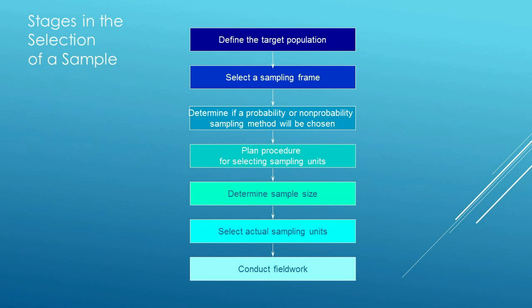Once you do that, you need to lay out your sampling procedure — how you're actually going to do the sample. We also need to determine the sample size: do we need one person, 10, 50, or 5,000? This depends on the size of your population and how accurate you want results to be. Once the size is determined, we pick the actual sampling units — people, families, or households — and then go out and do the field work collection.